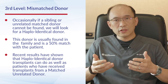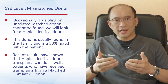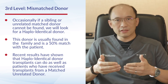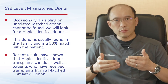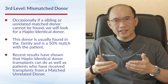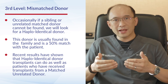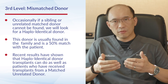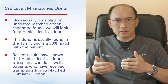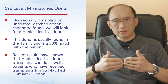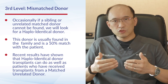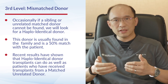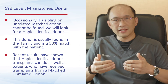We also look at what we call a mismatched donor — a technique that has gained popularity over the last few years. If we cannot find an unrelated matched donor or sibling donor, we consider a haploidentical donor: a family member who is a 50% match with the patient. Increasingly, results have shown that haploidentical donor transplants can do as well as transplants from a matched unrelated donor.